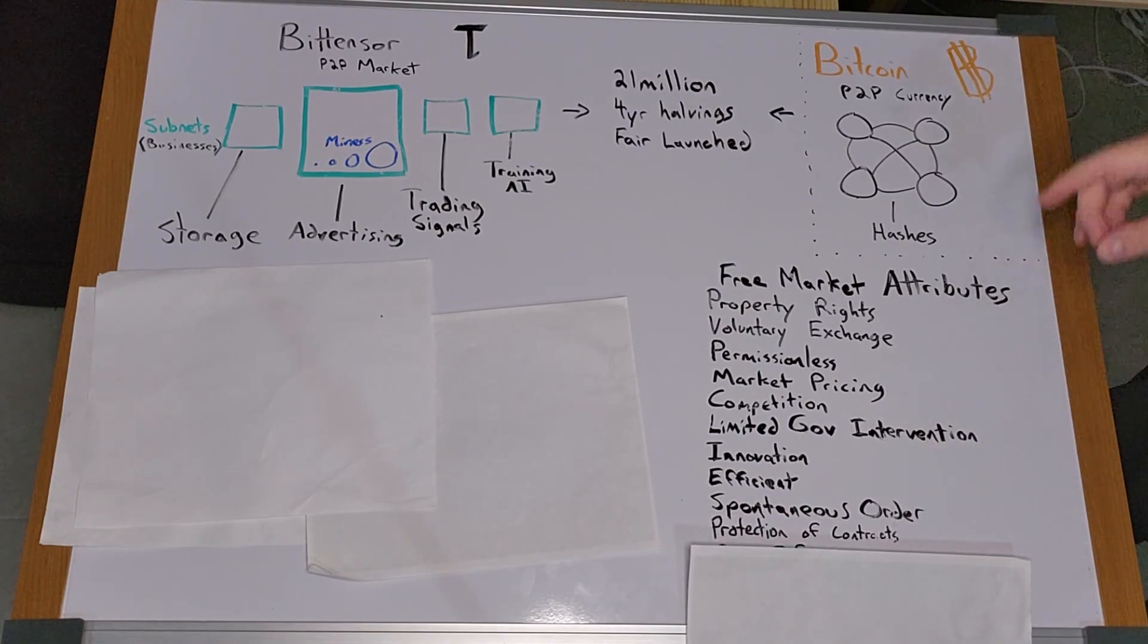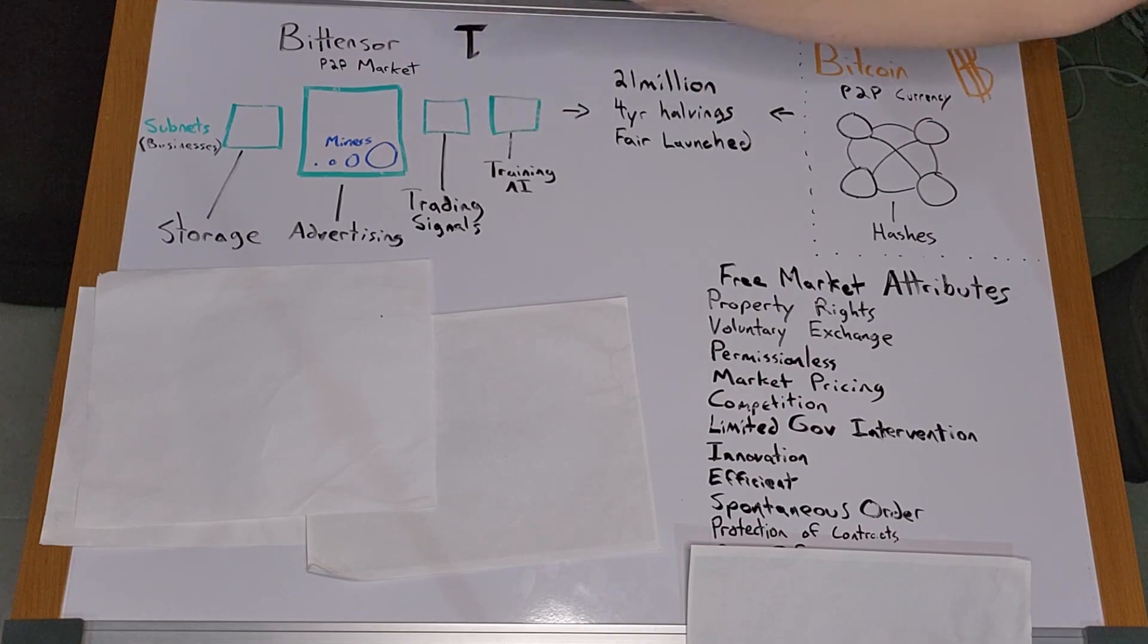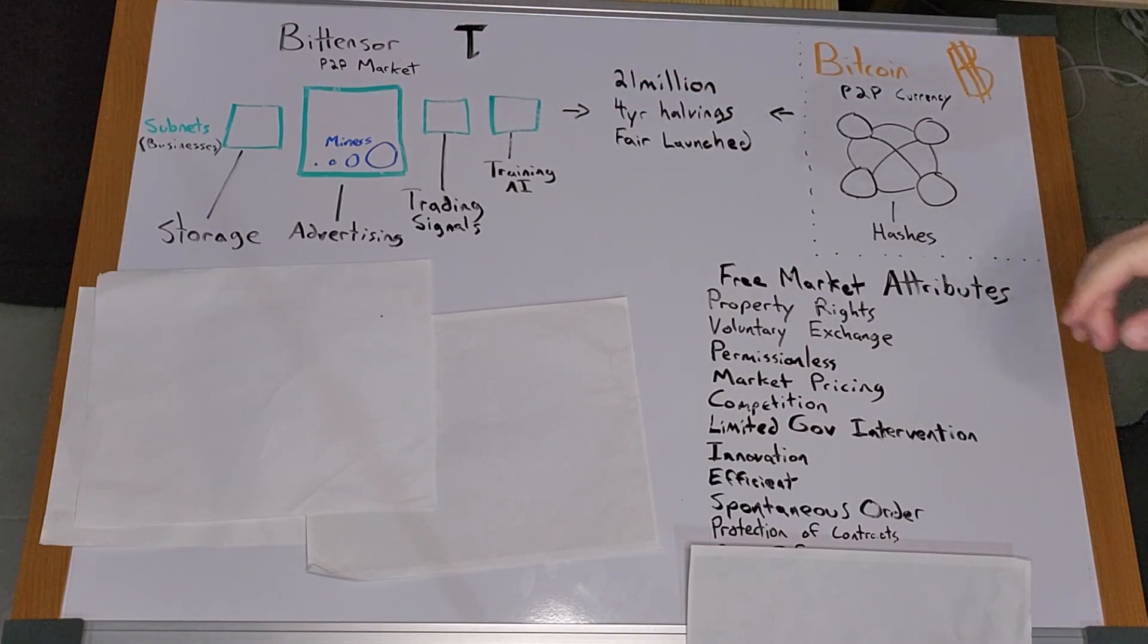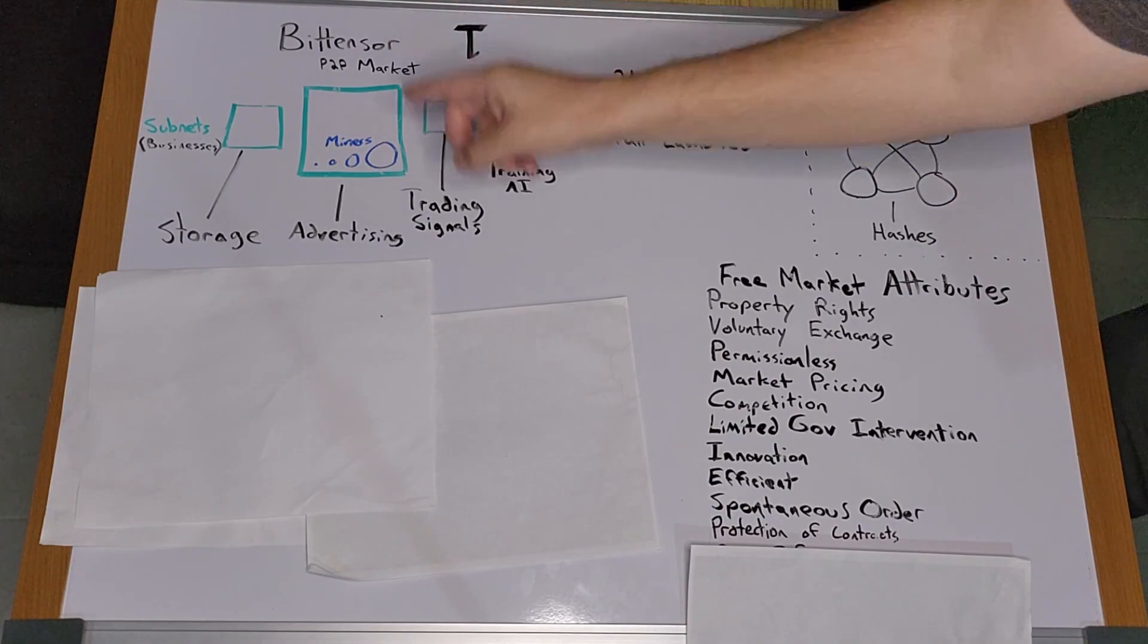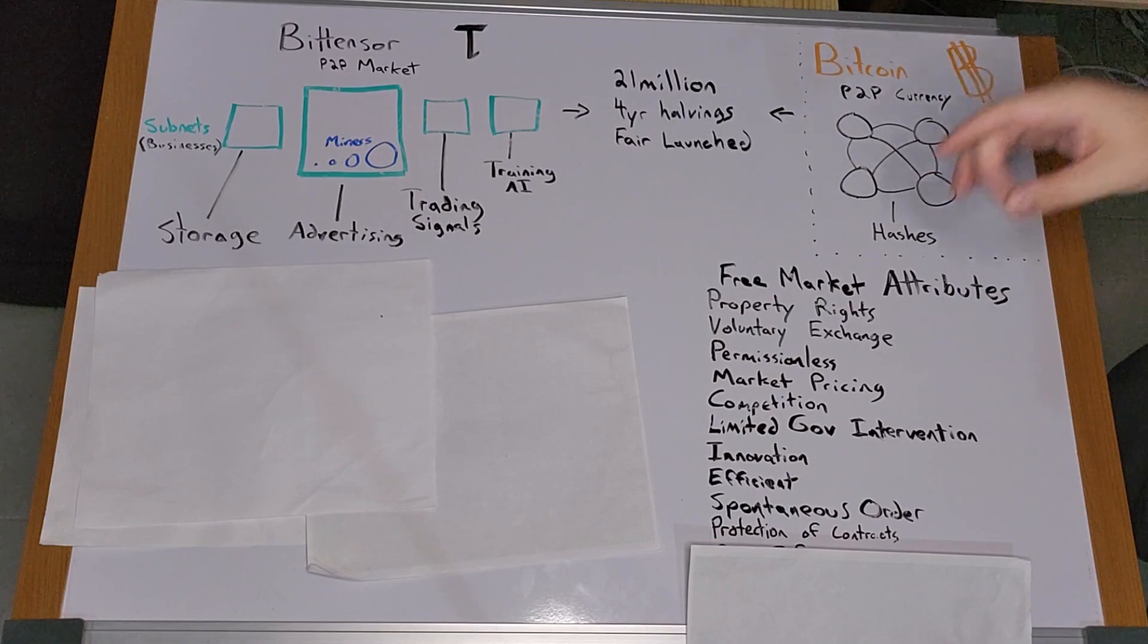Protection of contracts. Typically, contracts are enforced by governments. However, there are no contracts in BitTensor. They are not required at the base level. The actual mining and subnet creation and validation has no contracts. In order to get paid, miners must produce valuable work period.